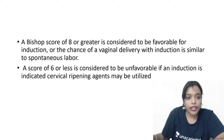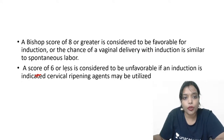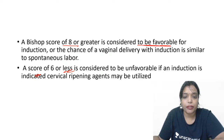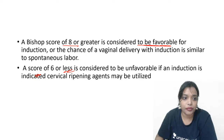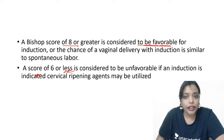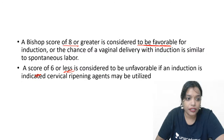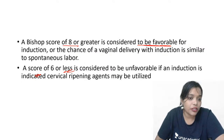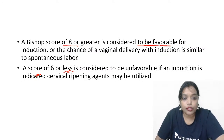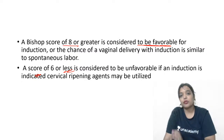As the B looks like 8, a Bishop's Score of 8 or greater is considered favourable, and you have more chance of vaginal delivery with induction. A Bishop's Score of 6 or less is considered unfavourable, so you should use cervical ripening agents when the score is 6 or less.